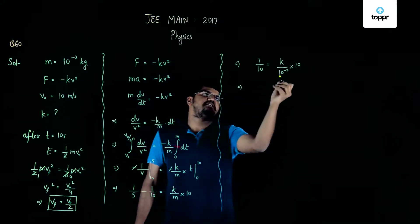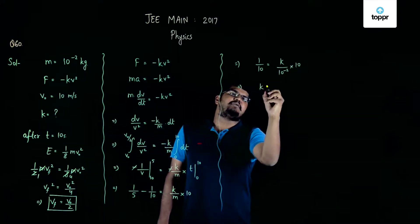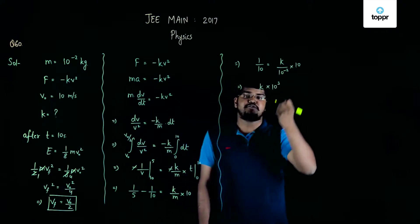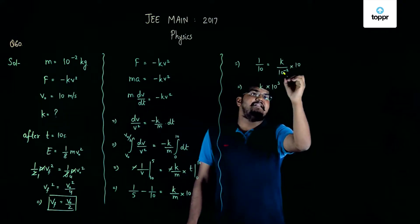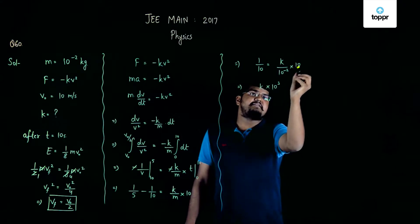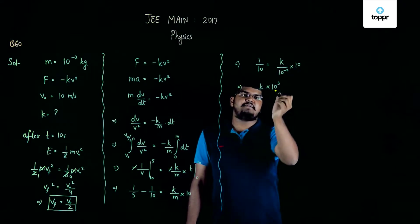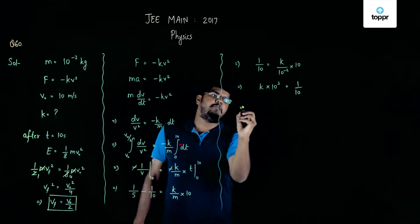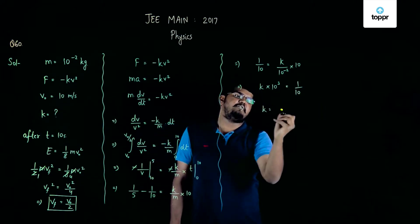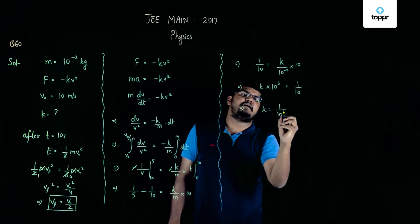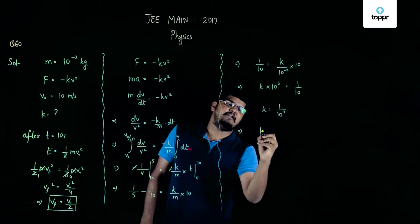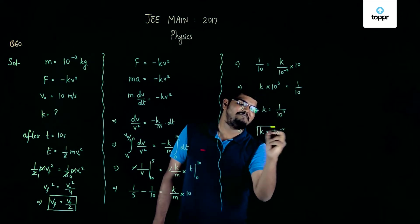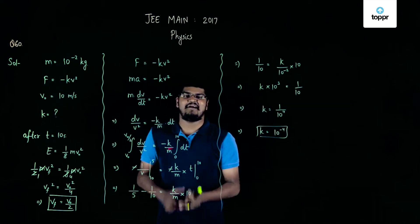Upon simplification, 10⁻² in the denominator goes to the numerator as 10², and together with the factor of 10 this becomes k × 10³ = 1/10. Therefore the value of k is 1/10⁴, and thus k = 10⁻⁴.